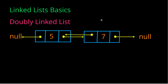For doubly linked lists, we can see that not only do they have a place to point to the next node, but they also have a pointer that goes to the previous node. So as we can see here, the node that contains 7 has a pointer that references the previous node, which in this case is the node that contains 5. Because this node is the head, there's nothing that comes before it. Therefore, when it points backwards, it actually just points to null.